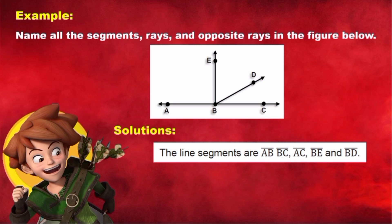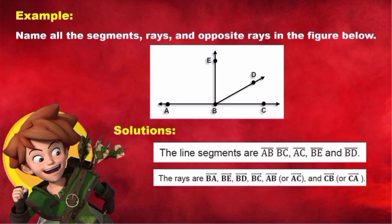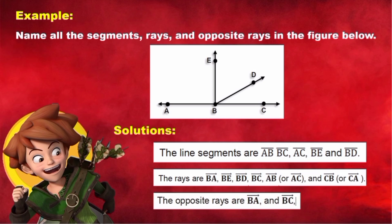The rays are ray BA, ray BE, ray BD, ray BC, ray AB or AC, and ray CB or CA. The opposite rays are ray BA and ray BD. The opposite rays are ray BA and ray BC.